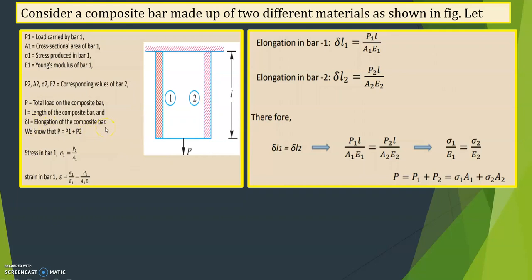If the bar is subjected to a tensile force there will be elongation, as shown here with a pulling force. If it is subjected to a compressive force, then there will be shortening in the length. According to the two points, total load is equal to P1 plus P2 — the sum of the loads shared by the two different materials.